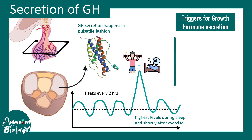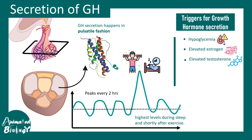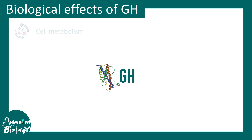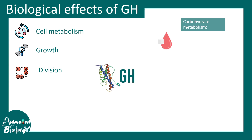There are many triggers for growth hormone secretion — for example, low glucose levels, elevated estrogen or testosterone especially during puberty, stress, trauma, or fever. It has also been shown that during different stages of sleep there is an elevated level of growth hormone secretion.